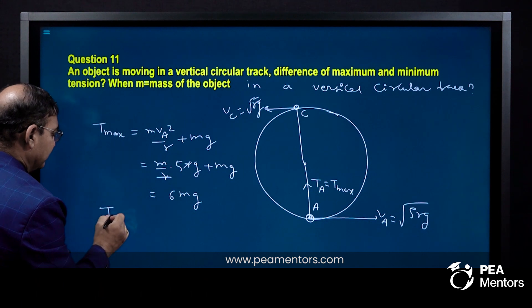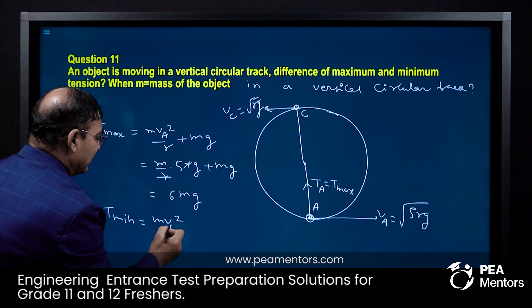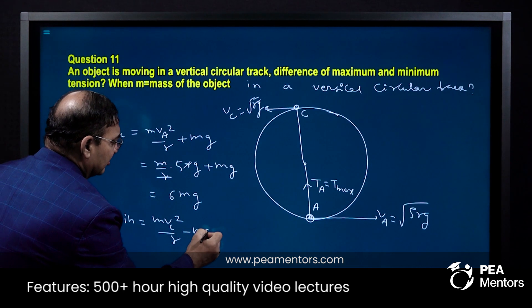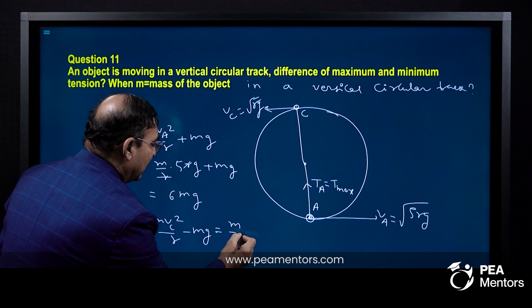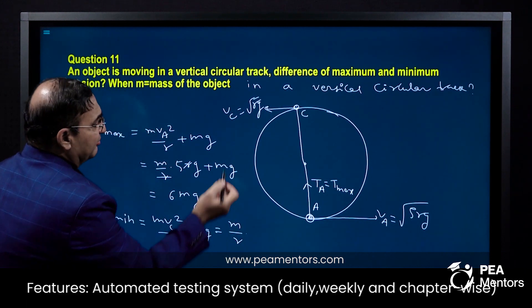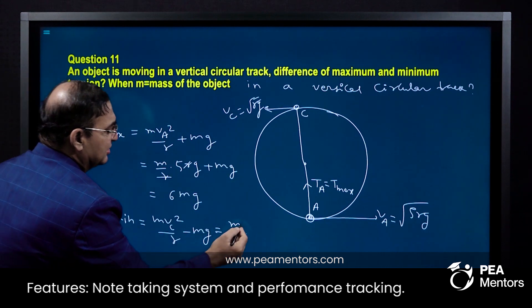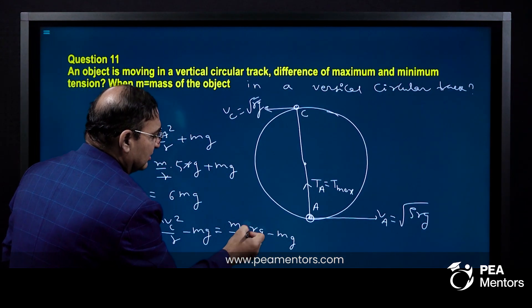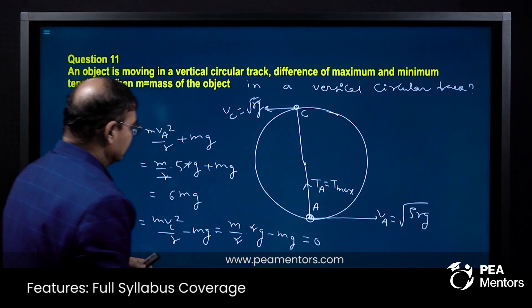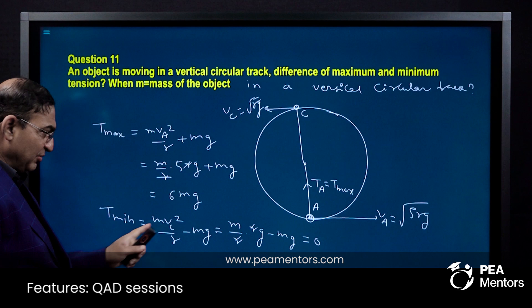Similarly, T minimum. T minimum formula is M VC squared by R minus MG. M by R, VC squared. VC is root over RG, therefore VC squared equals RG only. Minus MG, R cancels. So zero. Tension minimum is 0.